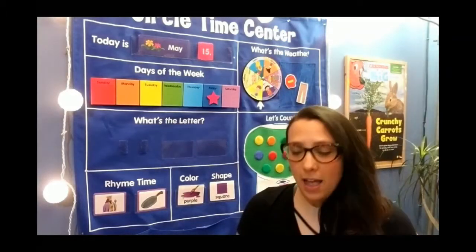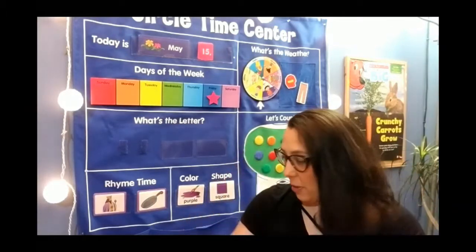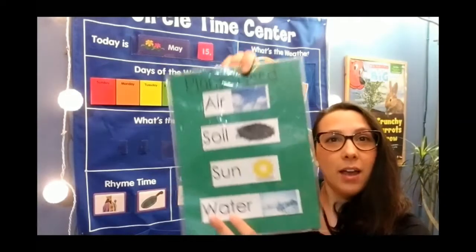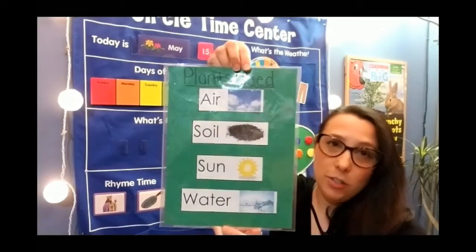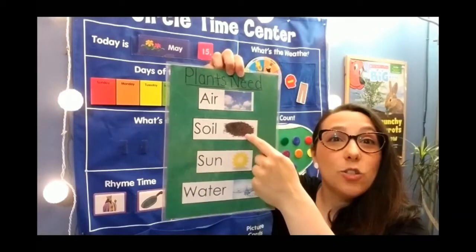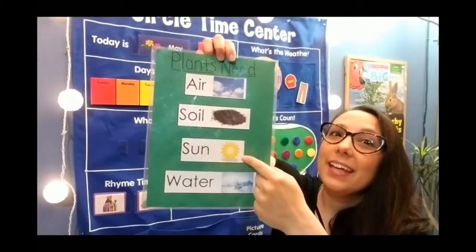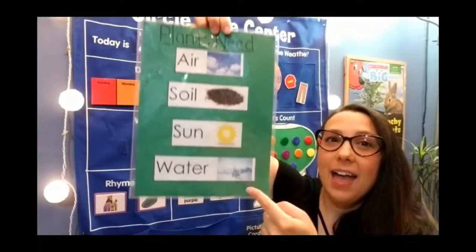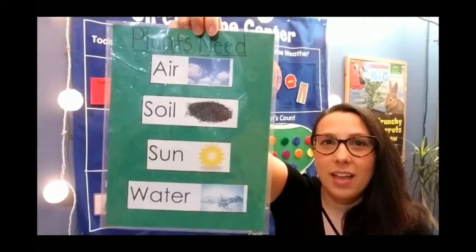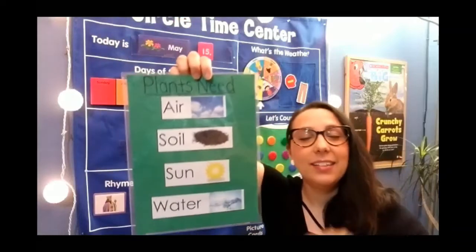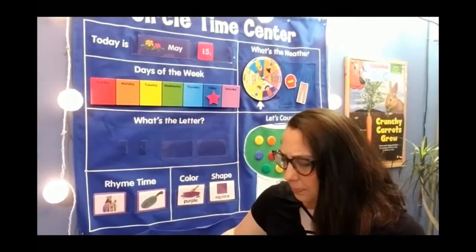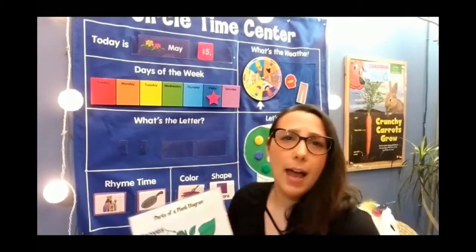That was great! Let's think about some of the things we learned about plants this week. What do plants need to grow? They need air, they need soil, they need sun, and water. That's right. And then that little seed that you have will sprout into a plant. Let's look at that plant and how it grows.